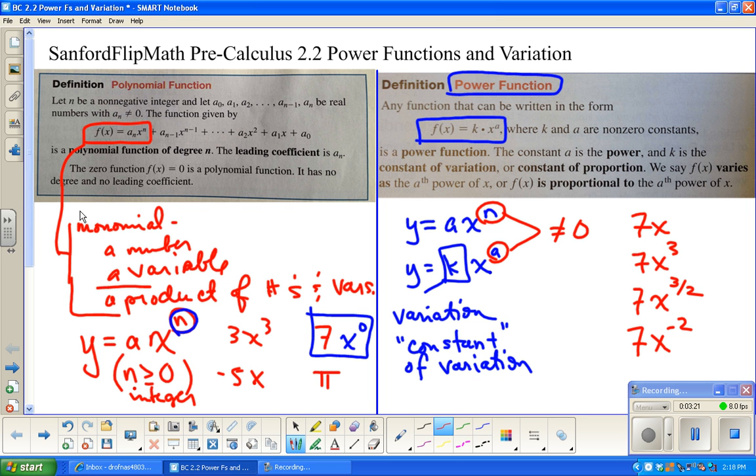7x to the three halves is also a power function, whereas that would not be a monomial. 7x to the negative two is also considered a power function, but not a monomial. So it's kind of a slightly different thing, and unfortunately they're similar, so they can be confused.